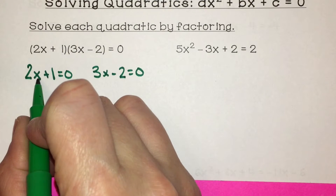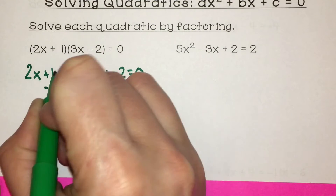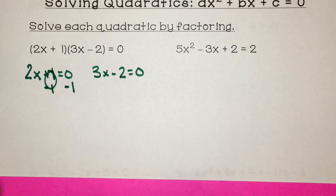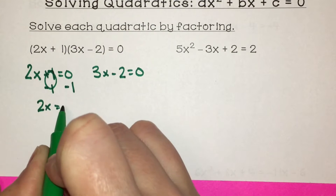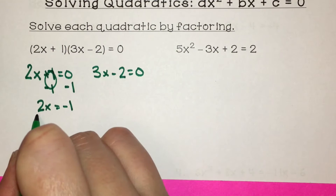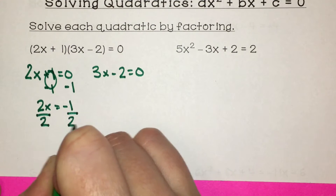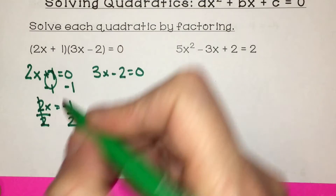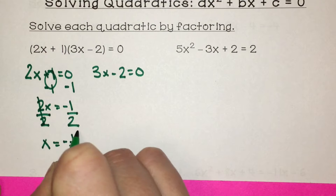To get x by itself, I need to get rid of the plus 1 by subtracting 1 on both sides of the equal sign. 1 minus 1 is zero, so I'm left with 2x equals negative 1. x is being multiplied by 2, so the opposite operation is to divide by 2 on both sides. 2 divided by 2 is 1, so I'm left with x equals negative 1 half.